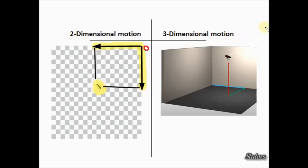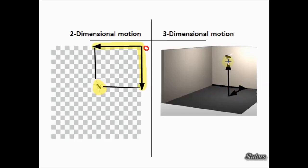Now what could be a three-dimensional motion? It is when you require three physical parameters to mark the position. For example, a fly which is flying in a room — you need three physical dimensions in order to mark its position. With these three dimensions you can mark its position, so this is a three-dimensional motion.